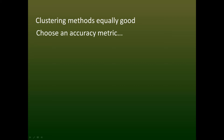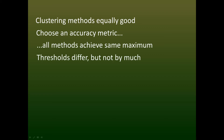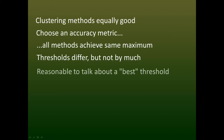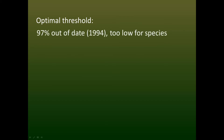I found that if we choose an accuracy metric and then allow the threshold to vary, then all methods are equally good. The optimal threshold varies between methods, but usually not by very much. We can therefore talk about the best threshold without worrying too much about which clustering method or accuracy metric was used. The 97% rule dates back to 1994, and I found that it's clearly too low for species and should be replaced.